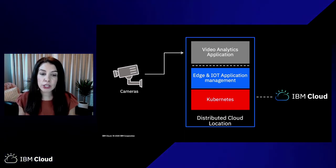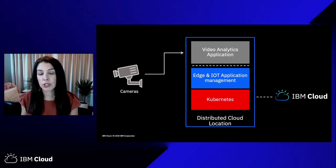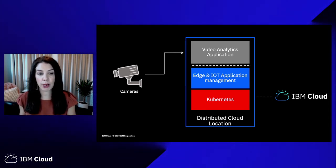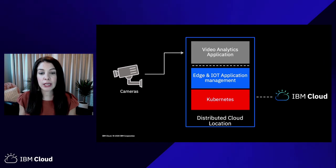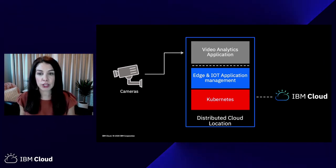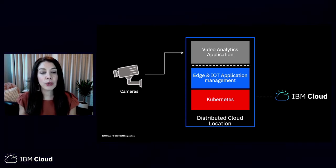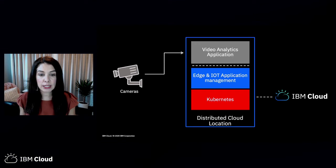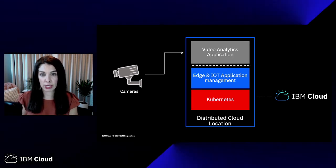Traditionally, doing that would require you to install servers and software and manage them on-prem. With Kubernetes and distributed cloud, we can extend the public cloud into the office so we can leverage cloud services to run this application close to the device. That's critical so we can reduce latency and effectively warn someone if they enter a dangerous area.